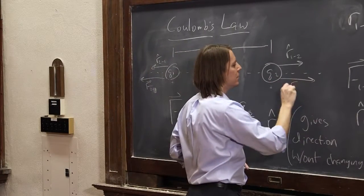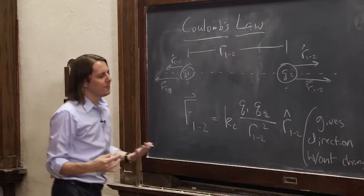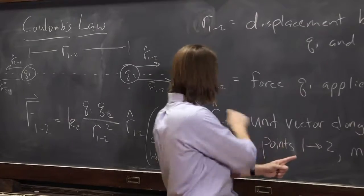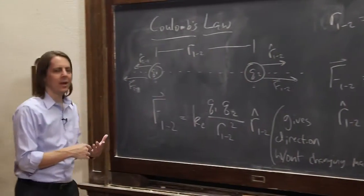And here, if I were to draw F, it'd be F1,2. So the way we're defining this unit vector, that it's along the axis, it points from the first number to the second number, makes the repulsive aspect work out.